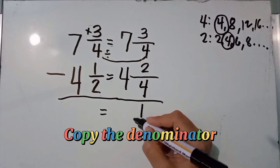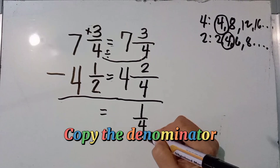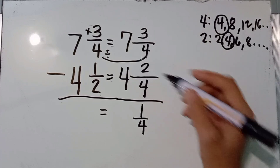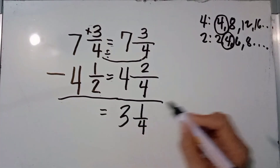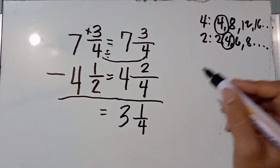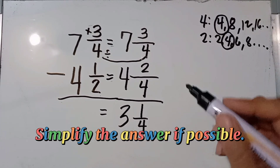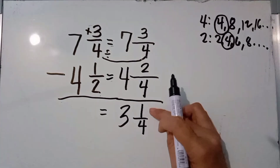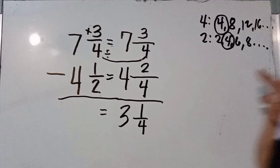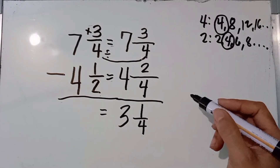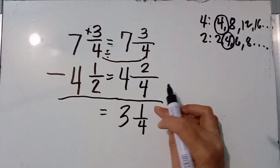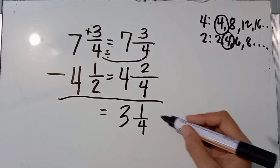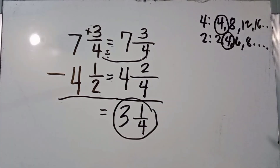Copy the denominator 4. Then subtract the whole numbers: 7 minus 4 equals 3. The last step is to simplify the answer if possible. The fraction 1 over 4 is already in lowest terms as they have no common factors. Therefore, the final answer is 3 and 1 fourth.